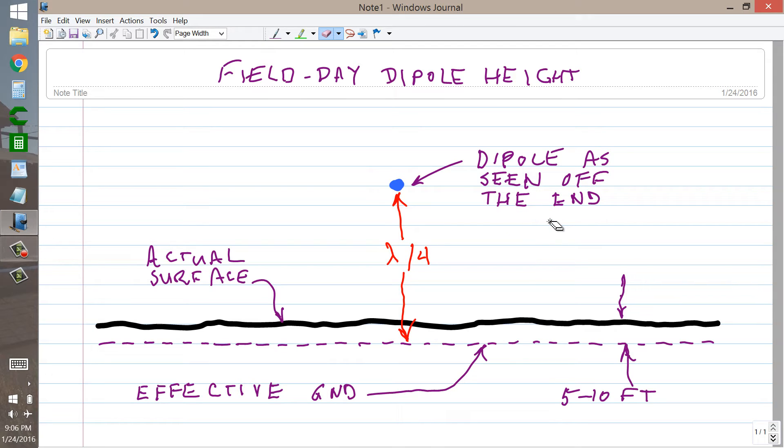W1GV Whiskey One. There is a common myth out there about dipole antennas and how to get them to radiate straight up. For field day, generally speaking, you want to make stateside contacts, particularly on 75 meters and 80 meters.